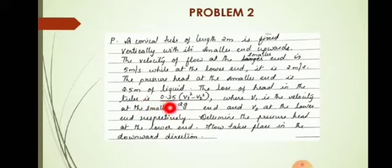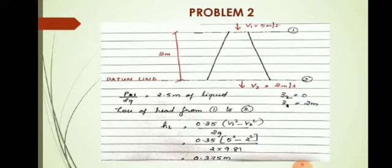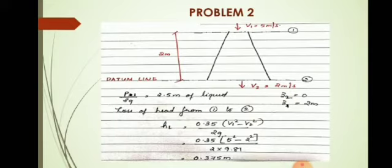The loss of head in the tube is given by the equation 0.35 into (V1 squared minus V2 squared) by 2G. Instead of giving the loss of head value directly, an equation is given, so we substitute corresponding values to find the loss of head. V1 is the velocity at the smaller end and V2 is the velocity at the lower end. So 0.35 into (5 squared minus 2 squared) divided by 2G gives HL equal to 0.375 meters.